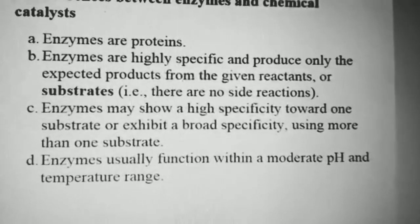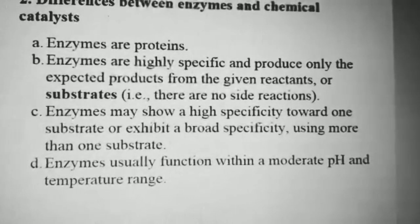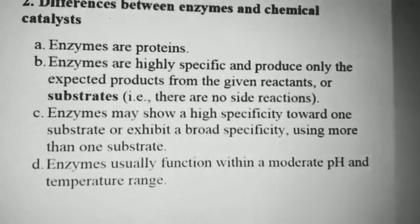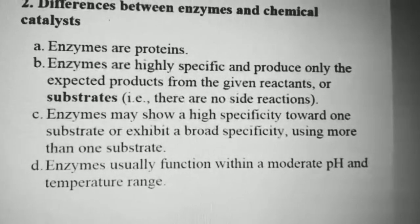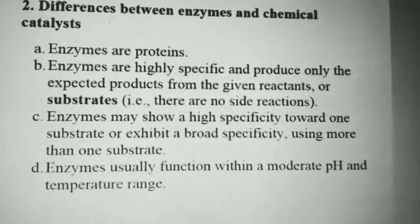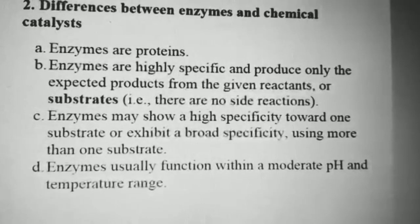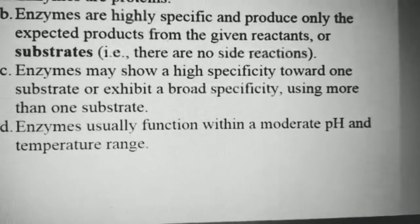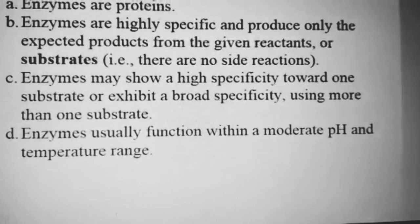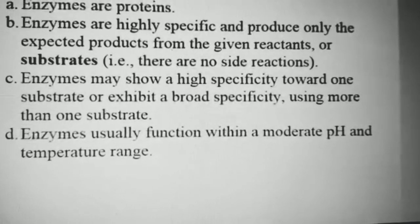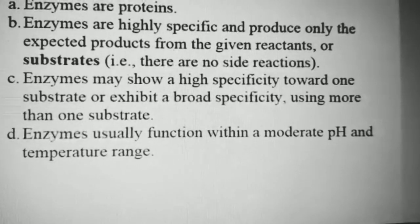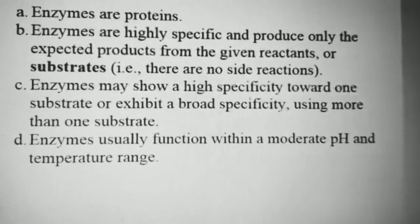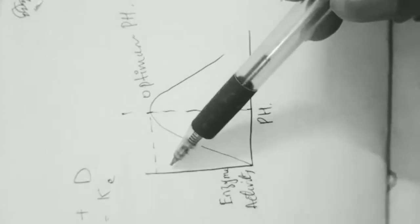Enzymes may show high specificity toward one substrate or a group of substrates, which is called broad specificity. Substrates under broad specificity belong to the same family or share same characteristics. Enzymes also work under specific conditions — they function within a moderate pH and temperature range, and the pH and temperature at which they work most efficiently are called optimum pH and optimum temperature.